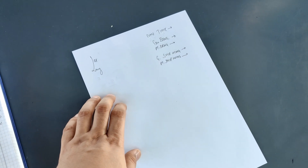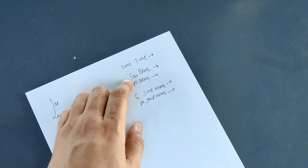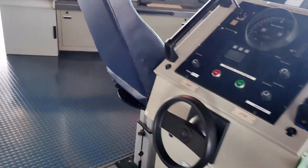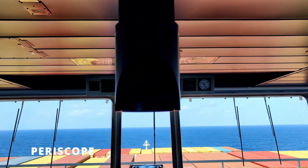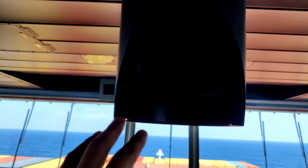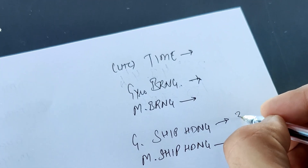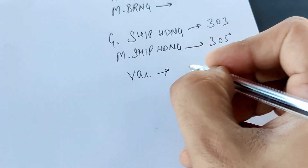You will keep this paper ready so that when you take the bearing you have to immediately record the latitude, longitude, UTC time, gyro bearing, magnetic bearing, gyro ship heading, and magnetic ship heading. You can see the gyro heading here — 303 — and just above that there is a periscope which shows the magnetic heading; the magnetic heading is 305. We write down gyro heading 303 and magnetic heading 305.